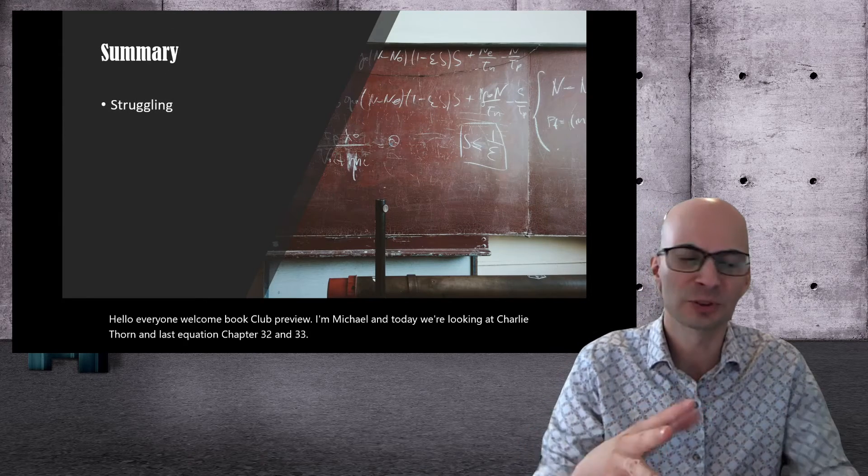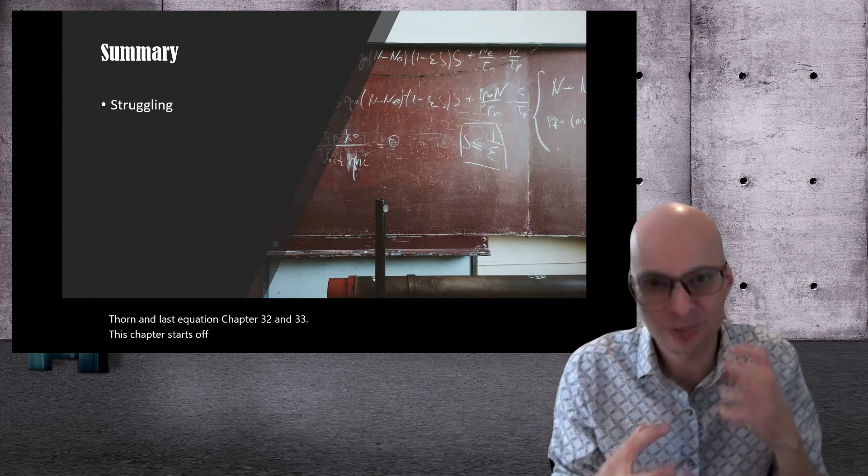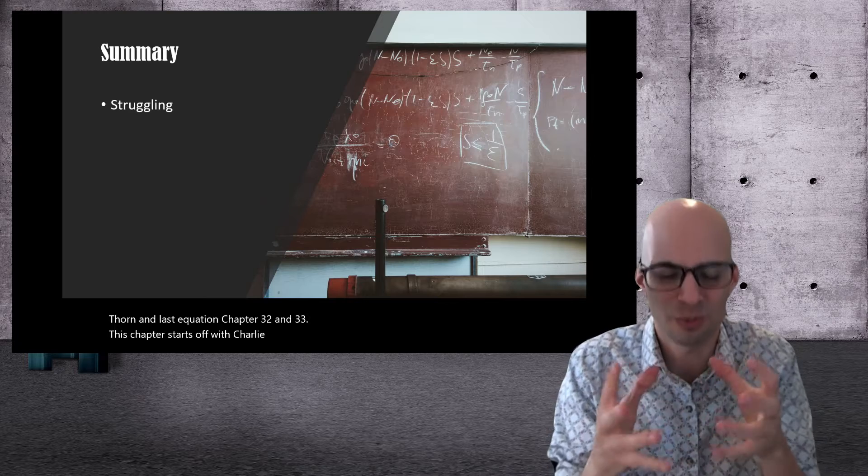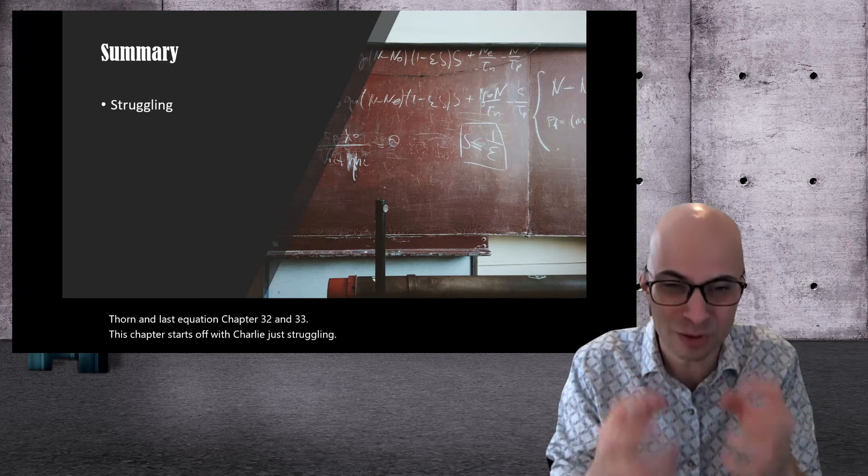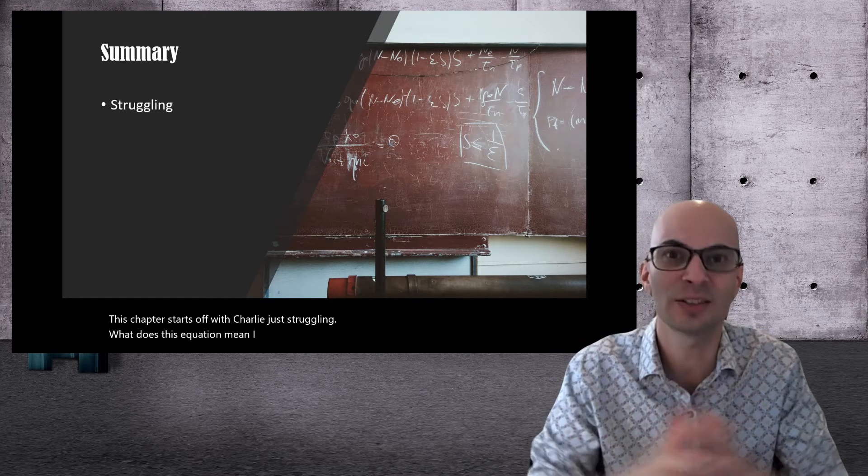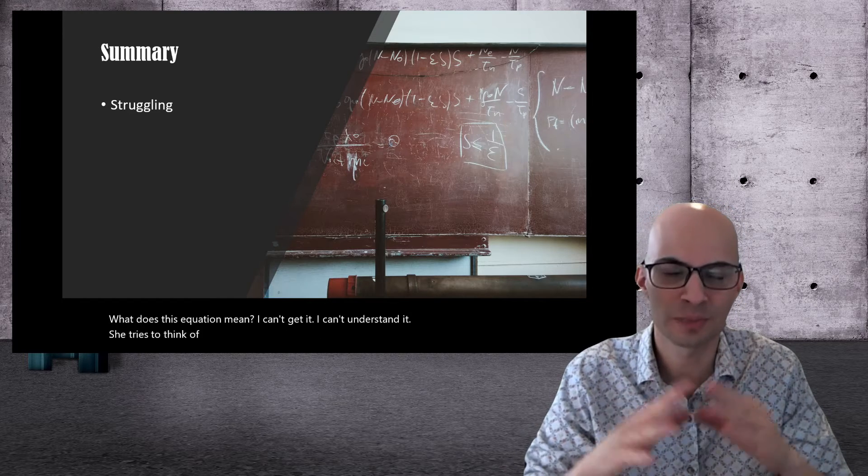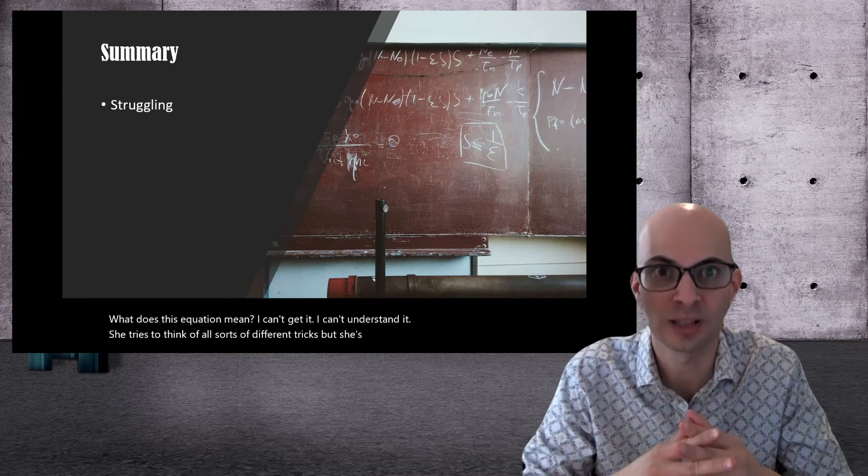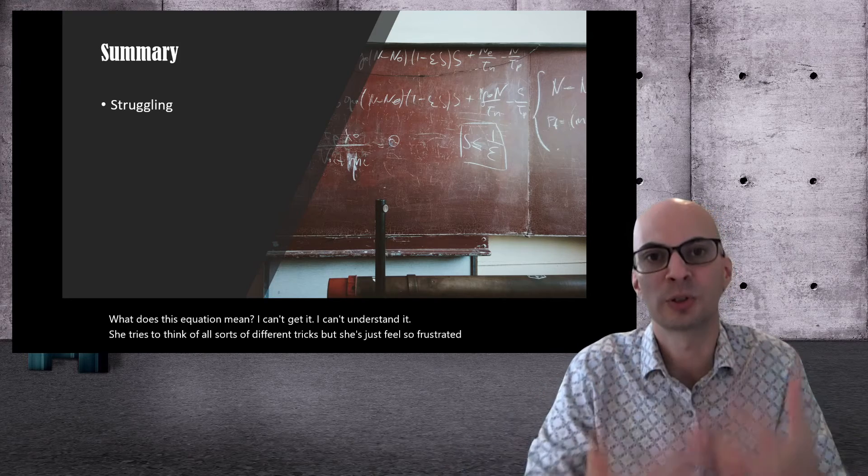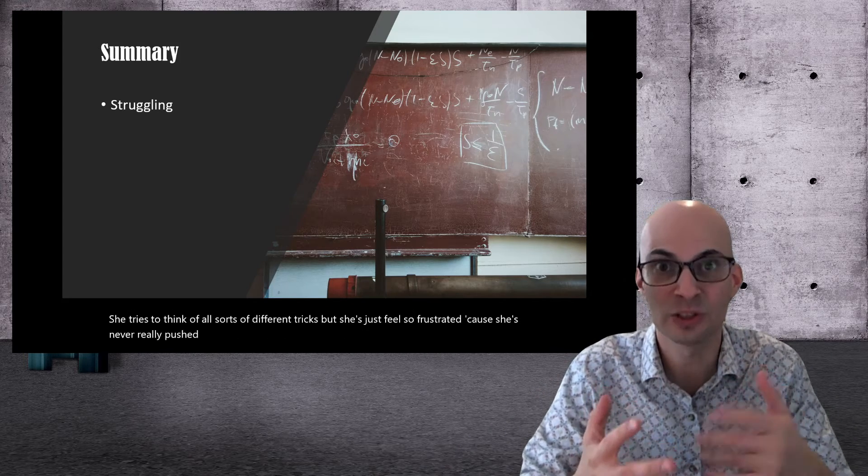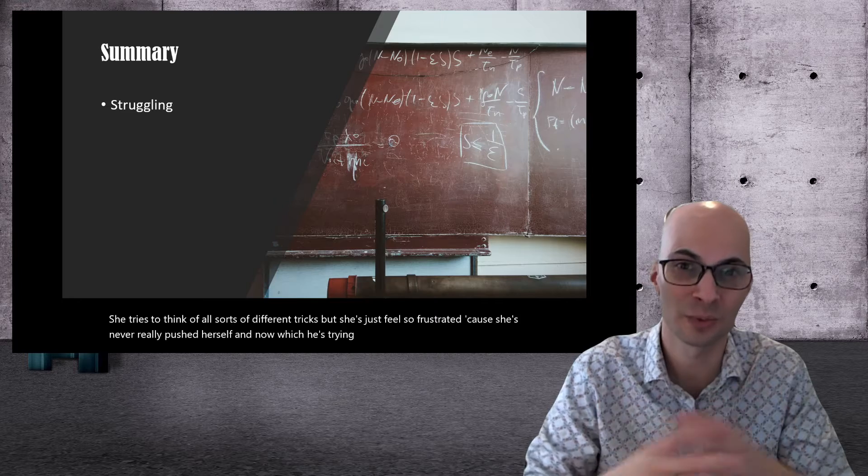Now, this chapter starts off with Charlie just struggling. What does this equation mean? I can't get it. I can't understand it. She tries to think of all sorts of different tricks, but she just feels so frustrated because she's never really pushed herself, and now when she's trying to, she's not really succeeding.